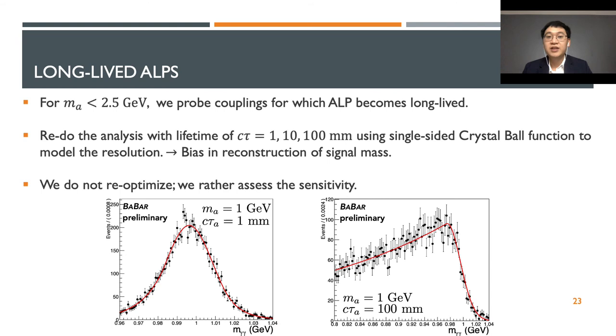However, to map the branching fraction limit to the coupling limit, we have to consider the fact that axion can be long-lived for light masses. We apply the same analysis for long-lived axion with 3 different lifetimes of 1, 10, and 100 mm. The only thing different is that we use the single-sided crystal ball function to fit the signal and extract the resolution. This would create a bias in the reconstruction of the signal mass at longer lifetimes because the photons are reconstructed assuming they're coming from the beam spot. However, they are not.